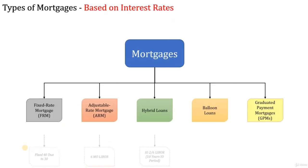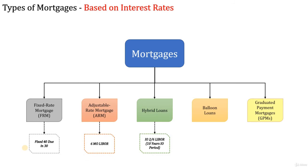Now let's learn about the different types of mortgages based on interest rate. The first one is the fixed rate mortgage. This kind of mortgage comes with an interest rate that will never change over the entire life of the loan, irrespective of changes in market rates and economic trends. However, there could be a change in property tax and insurance payments included in the monthly payment. The term of a fixed rate mortgage is usually 15, 20, or 30 years.